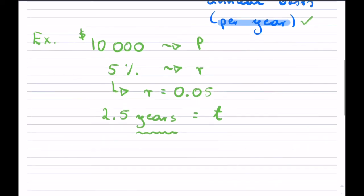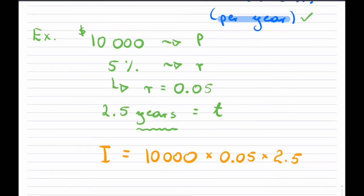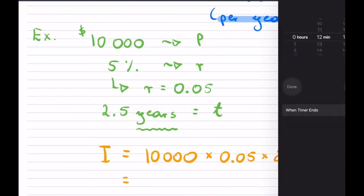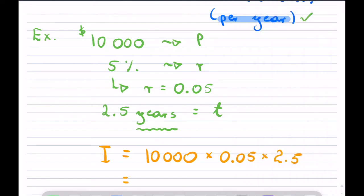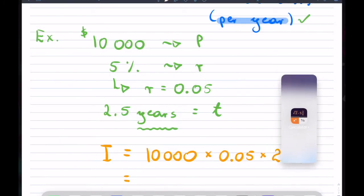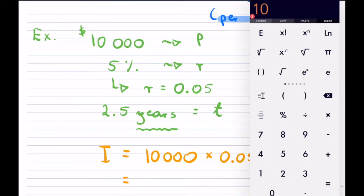This would tell us that what we have is that our interest, I, is equal to our principle, which is $10,000, multiplied by the rate as a decimal, which is 5% or 0.05, and that has been done for two and a half years. So this calculation, as we can plug it back into our calculator here, that would be 10,000 multiplied by 0.05 and times 2.5, and our interest would be $1,250.